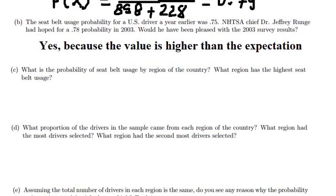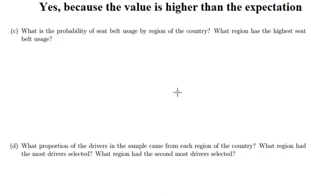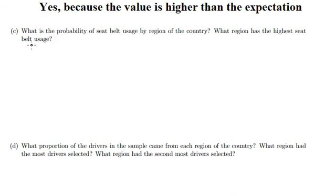So on the question, they want to find the probability of seat belt by the region. So in this one, we need to use about, for example, I choose about Northeast. And I will put about, for example, the probability of Northeast.